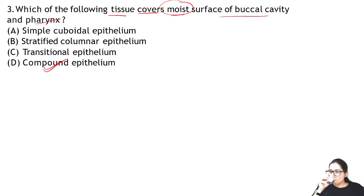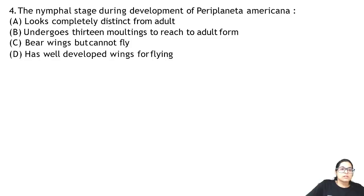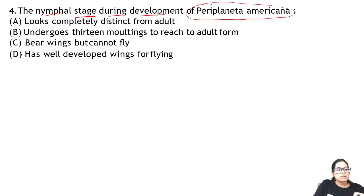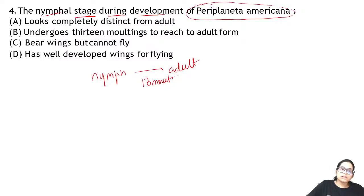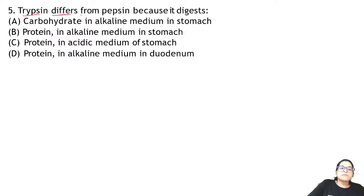Zoology Question 4: the nymphal stage during development of Periplaneta americana — the cockroach. The nymph converts into an adult through 13 moltings. So the answer for question 4 is B.